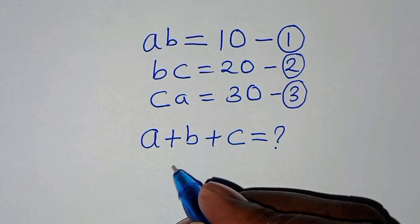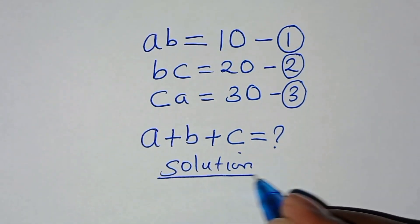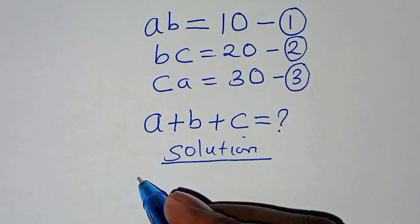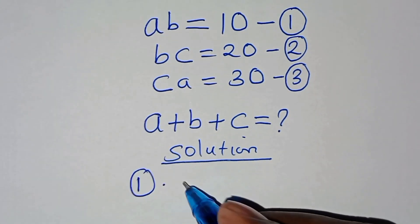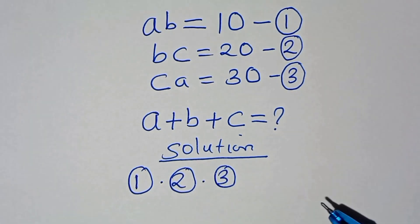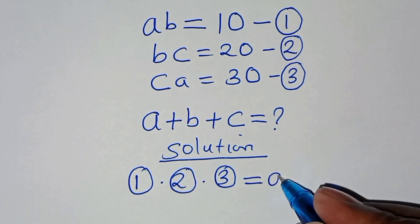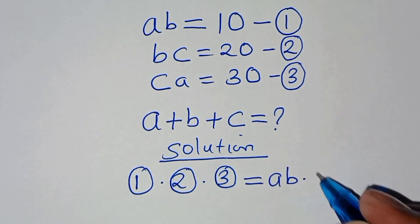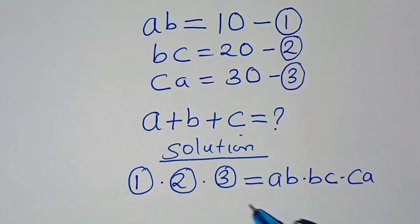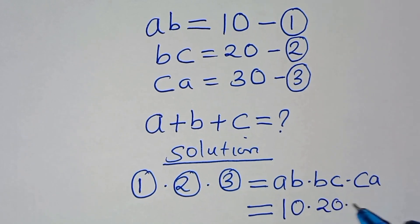Now, the first thing to do here is multiply equation 1 by equation 2 by equation 3. So this is the same thing as a times b, times b times c, times c times a, and this equals 10 times 20 times 30.